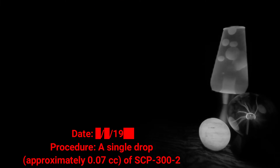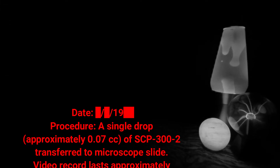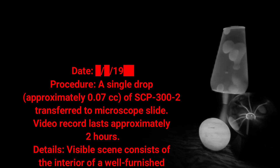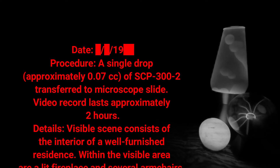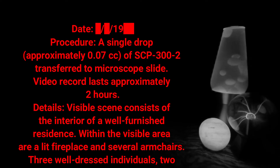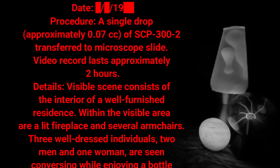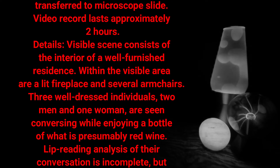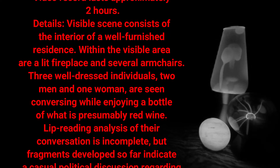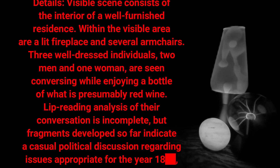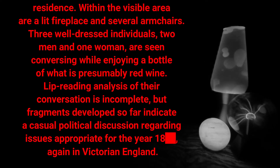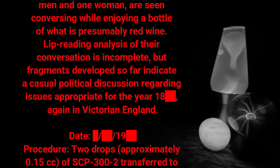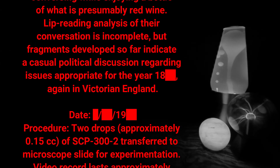Experiment Log — Procedure: A single drop, approximately 0.07 cc of SCP-300-2, transferred to microscope slide. Video record lasts approximately two hours. Details: The visible scene consists of the interior of a well-furnished residence. Within the visible area are a lit fireplace and several armchairs. Three well-dressed individuals — two men and one woman — are seen conversing while enjoying a bottle of what is presumably red wine. Lip-reading analysis of their conversation indicates a casual political discussion regarding issues appropriate for the year 18[DATA EXPUNGED], again in Victorian England.